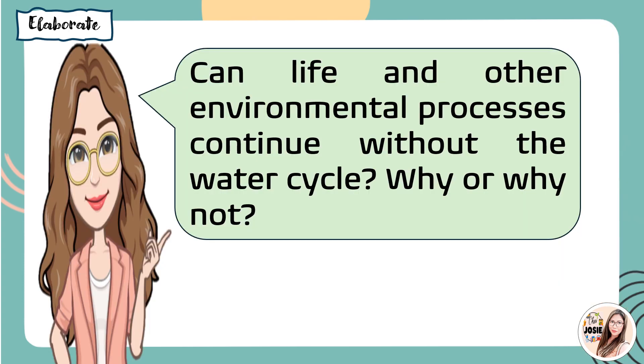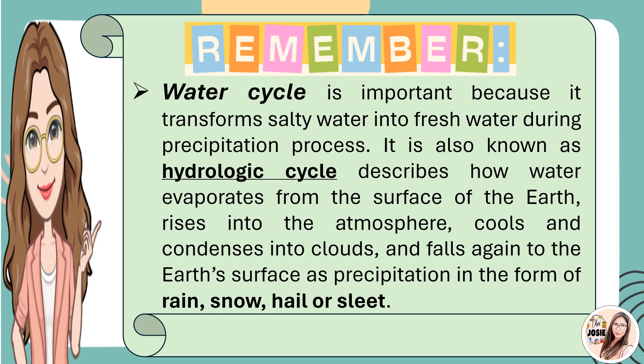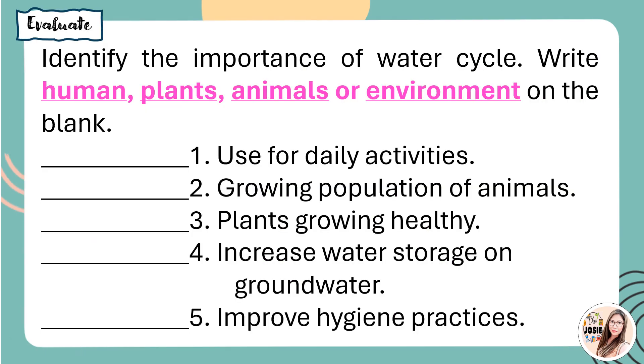Can life and other environmental processes continue without the water cycle? Why or why not? Correct. The water cycle is important because it transforms salty water into fresh water during the precipitation process. The water cycle is also known as the hydrologic cycle. It describes how water evaporates from the surface of the Earth, rises into the atmosphere, cools and condenses into clouds, and falls again to the Earth's surface as precipitation in the form of rain, snow, hail, or sleet.